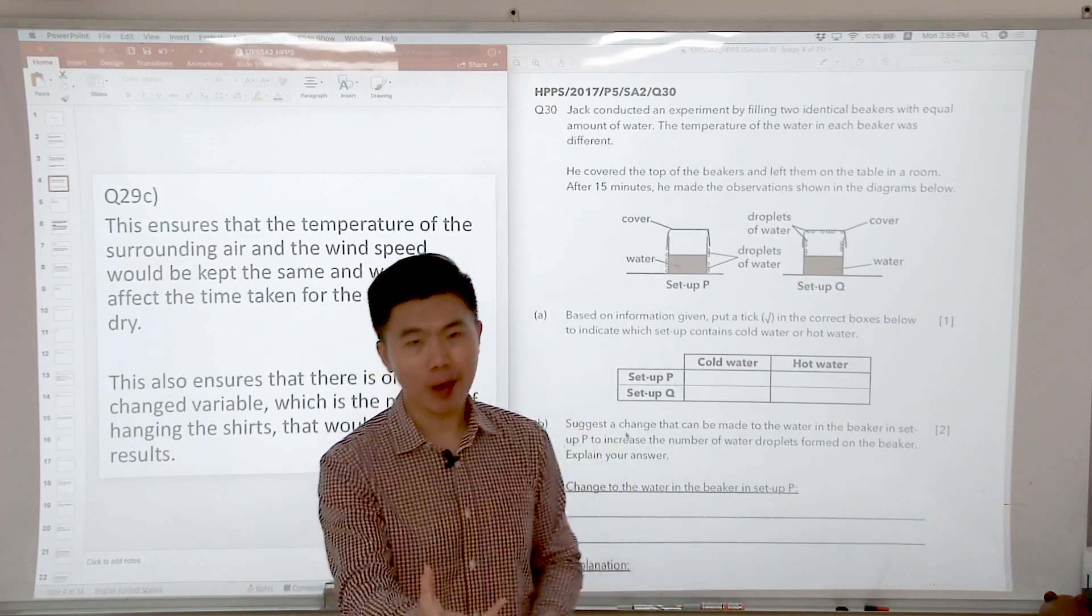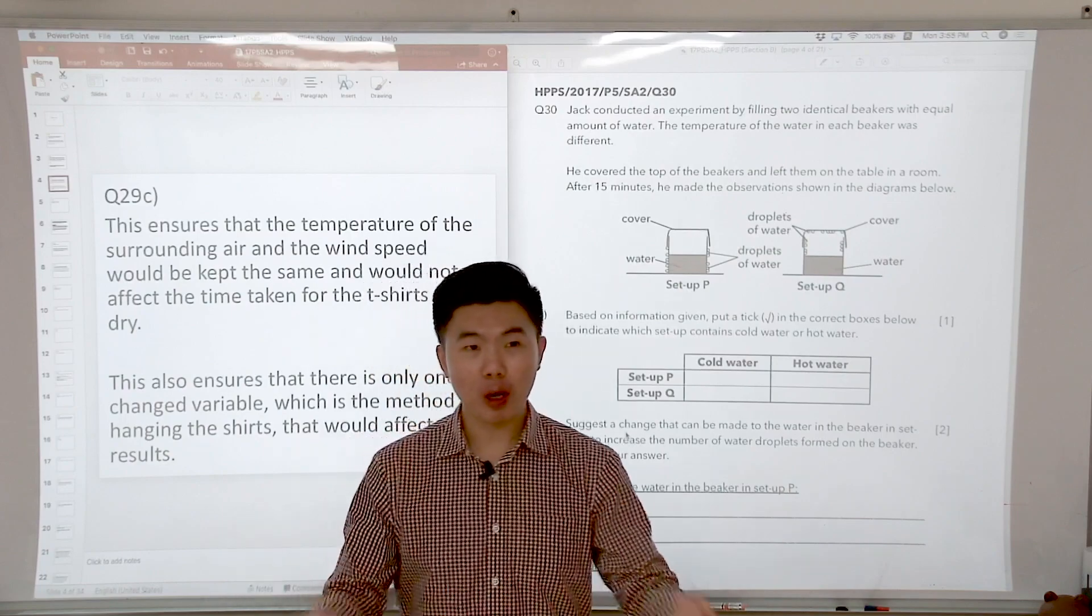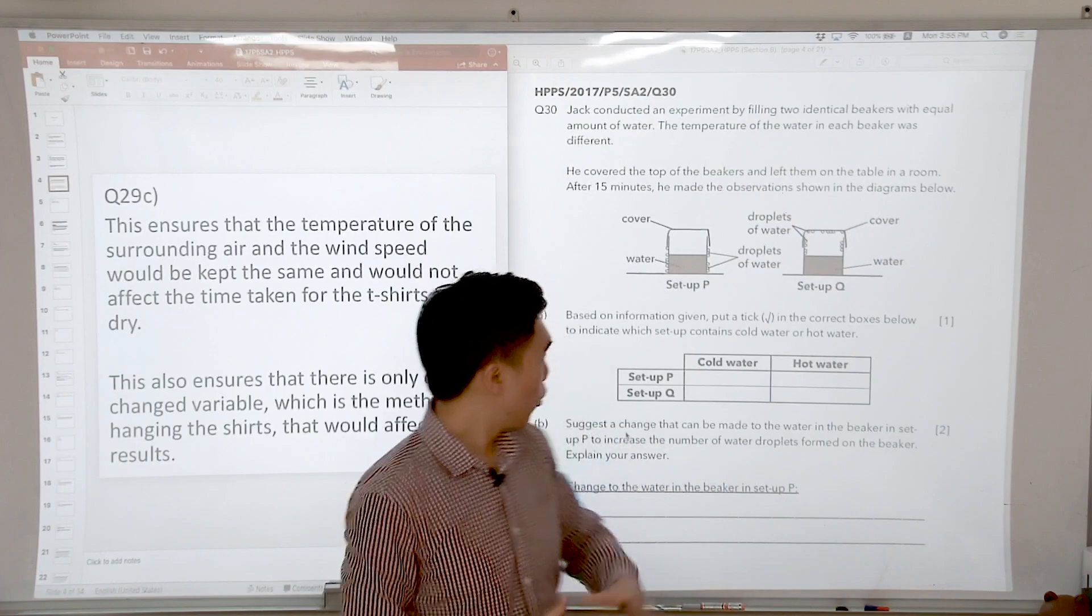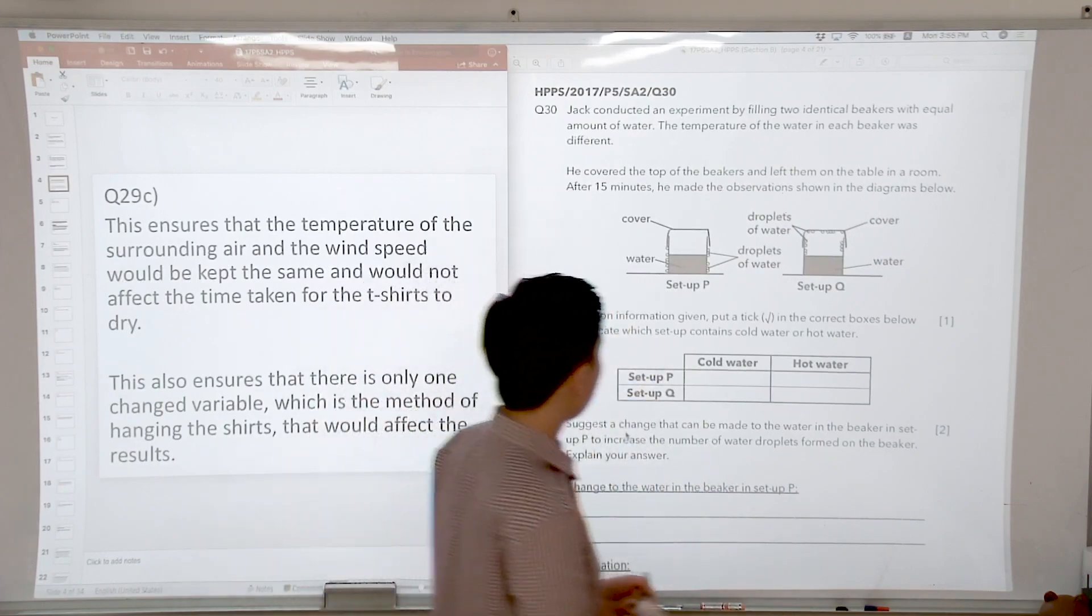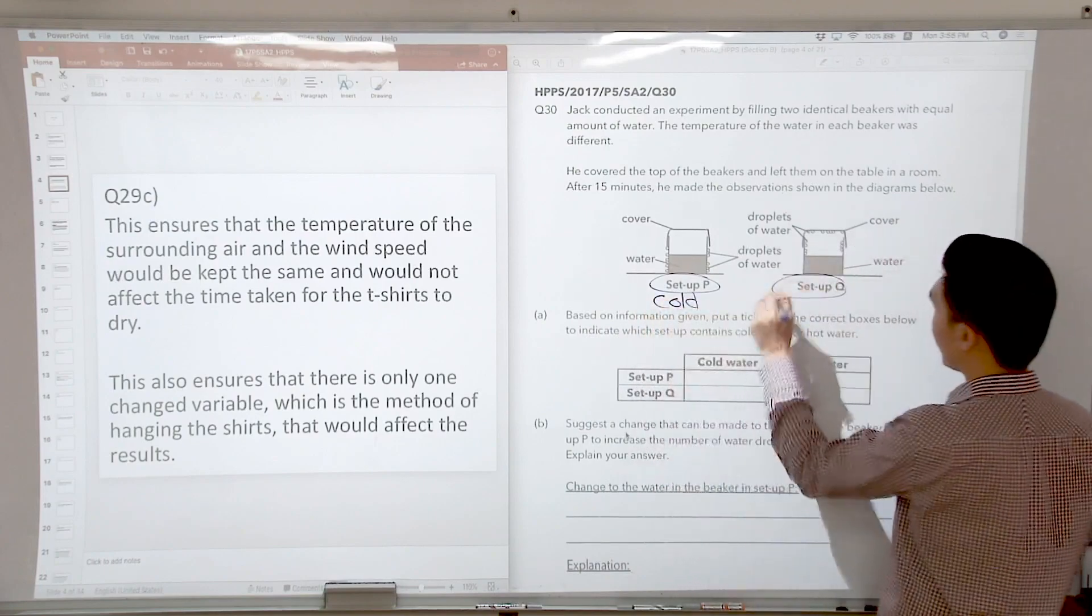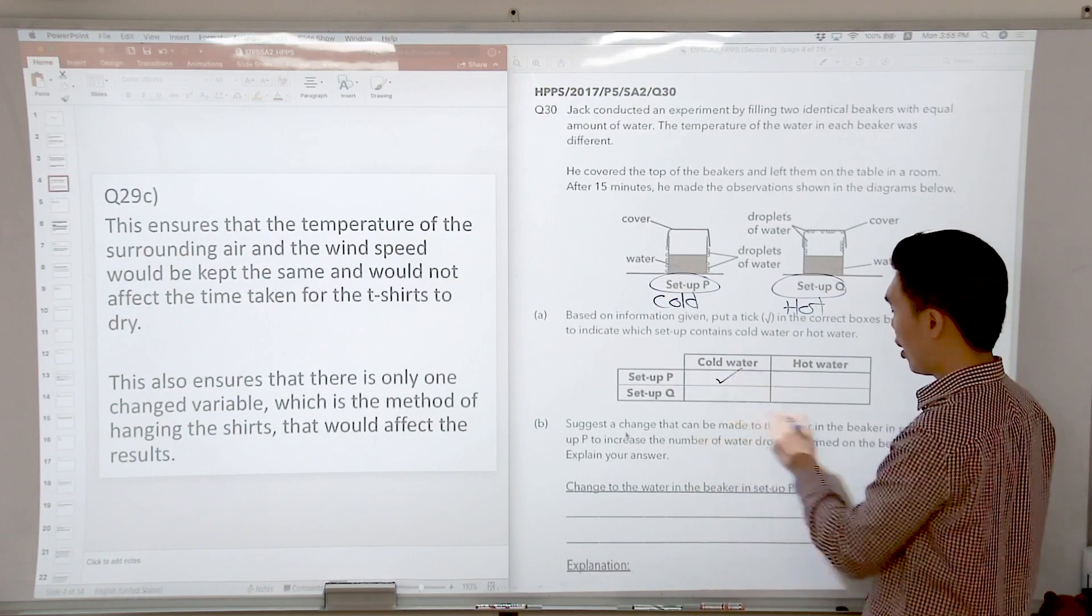If we have a cup with hot water inside, where would the water droplets be formed? The water droplets will be formed on the inner surface of the cup. So one look at this, I know that P is going to represent cold water and Q is going to represent hot water and then I will have my answer for A.